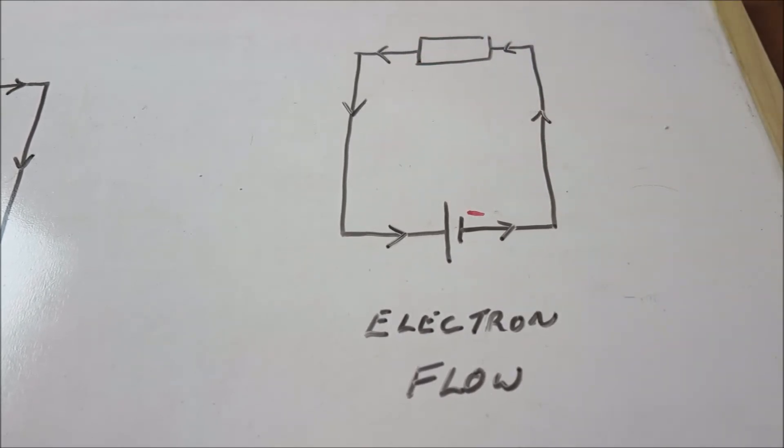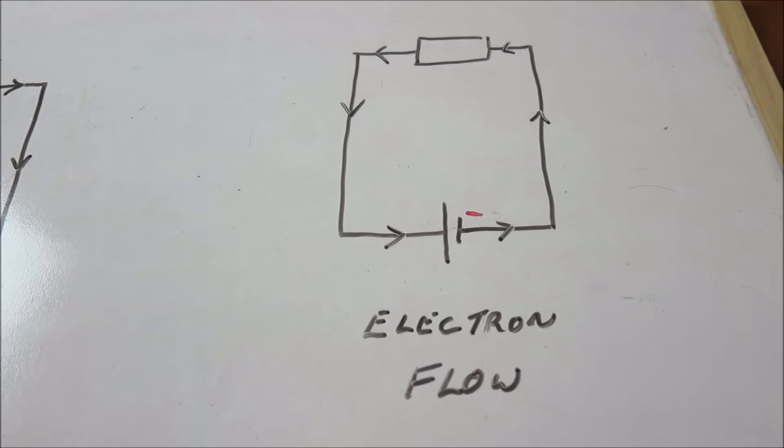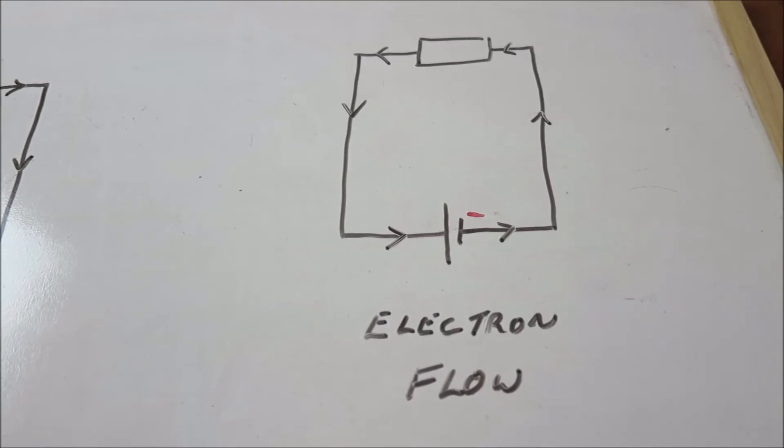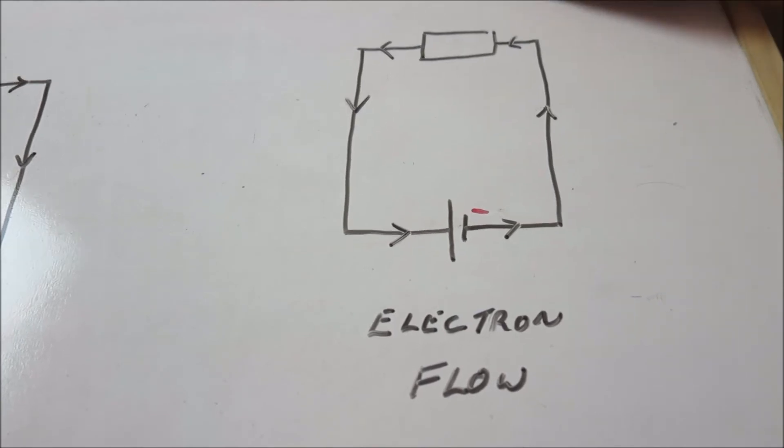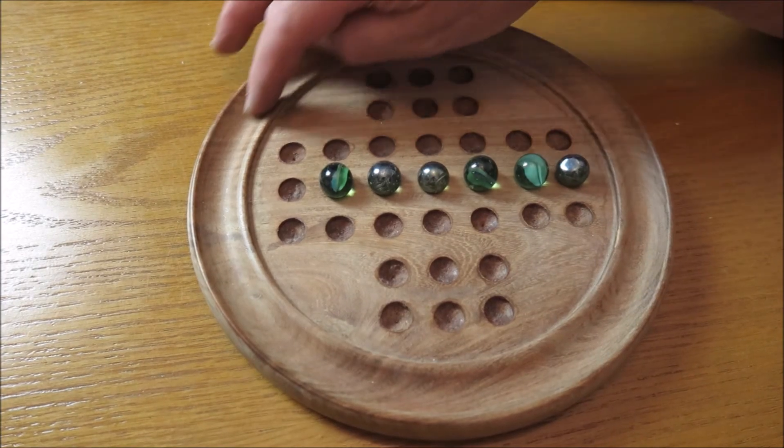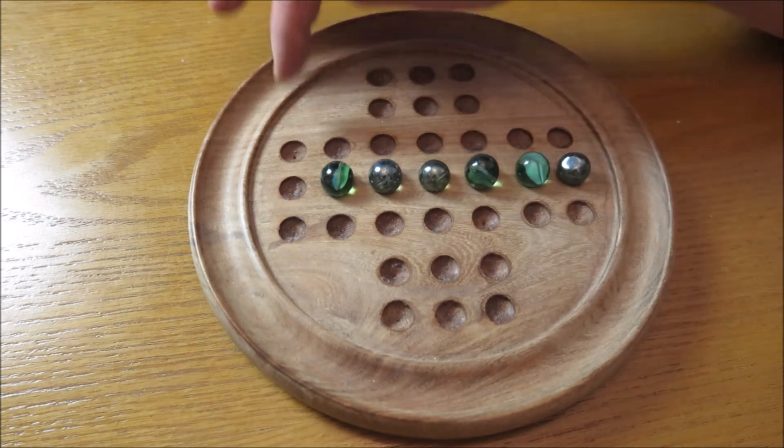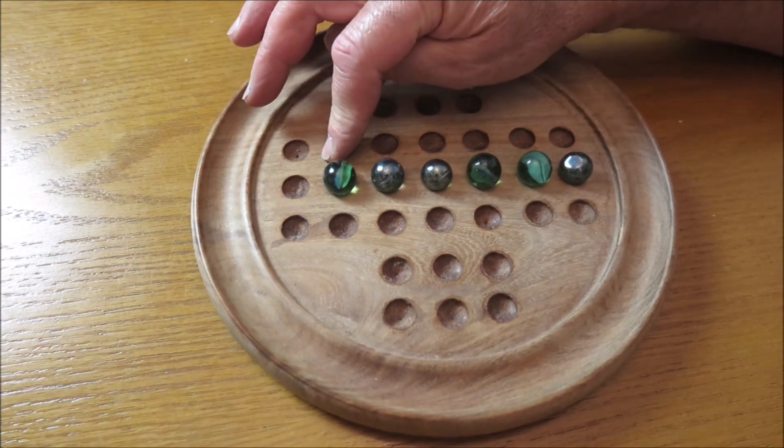Now, when an electron moves from atom to atom, it creates a hole, so effectively a positive charge. And a good way of demonstrating this is if we look at this solitaire game here and we imagine these marbles are electrons.